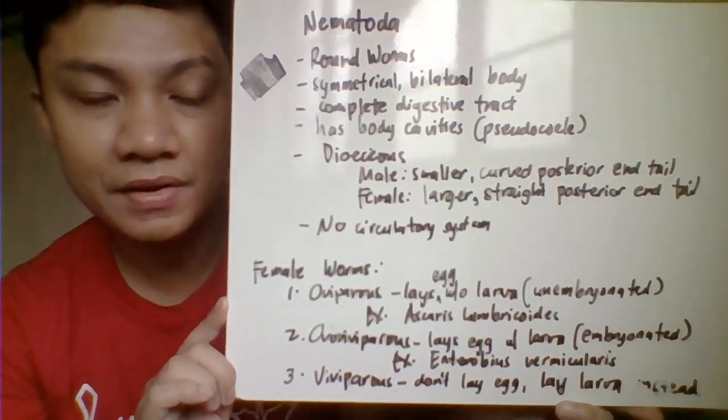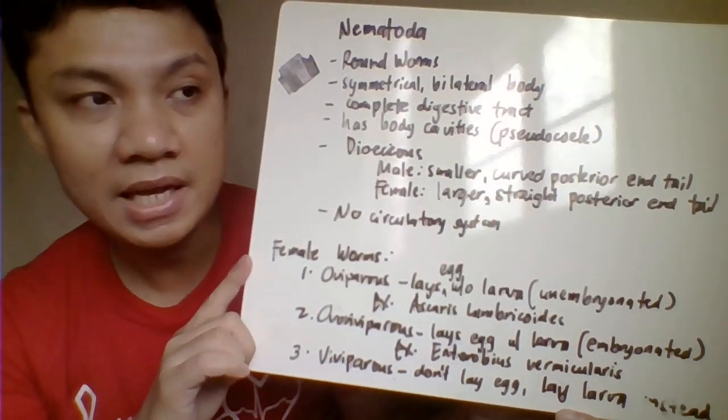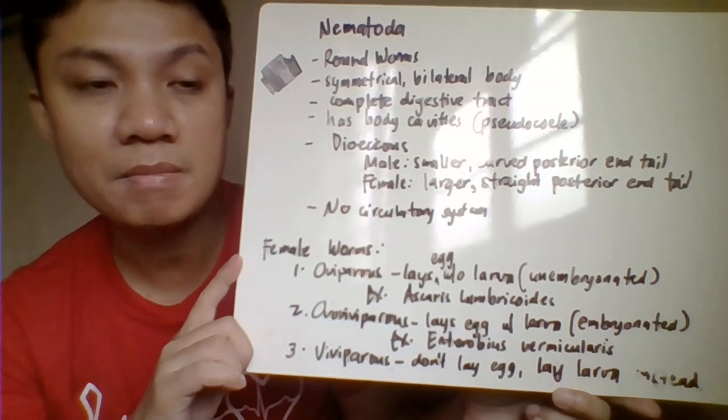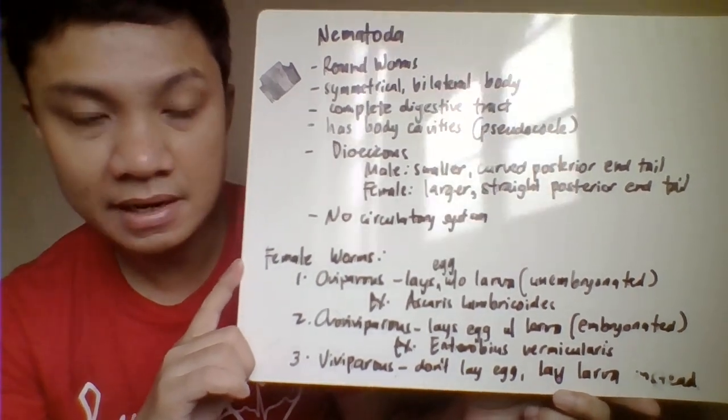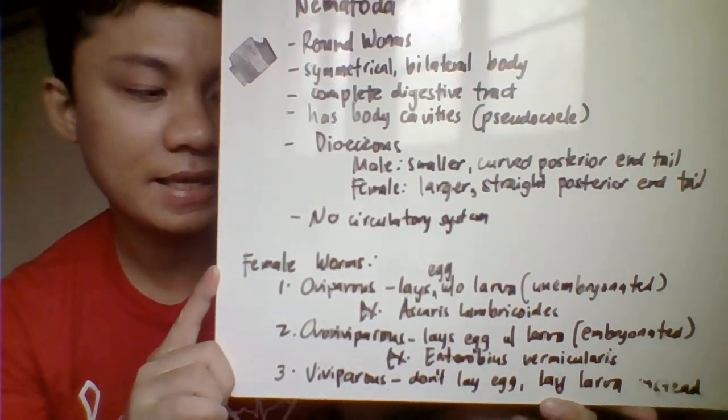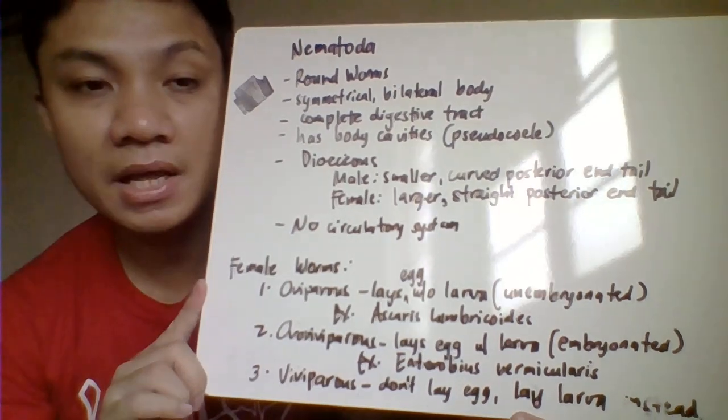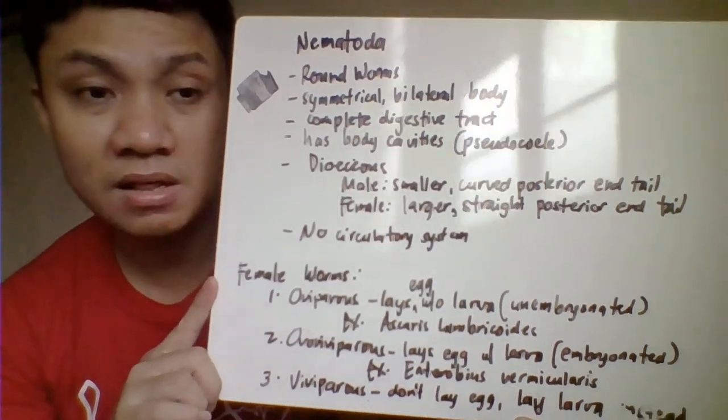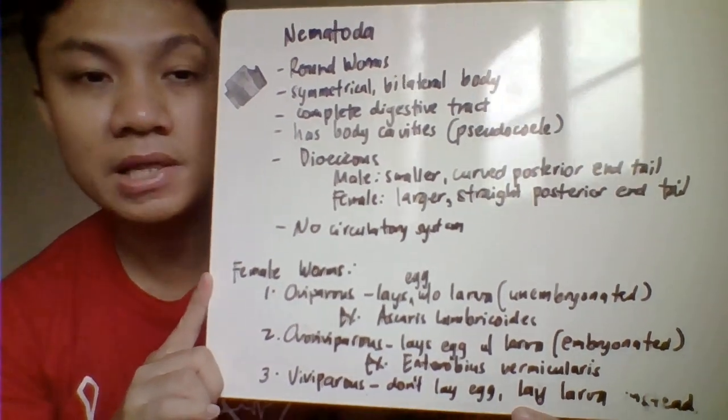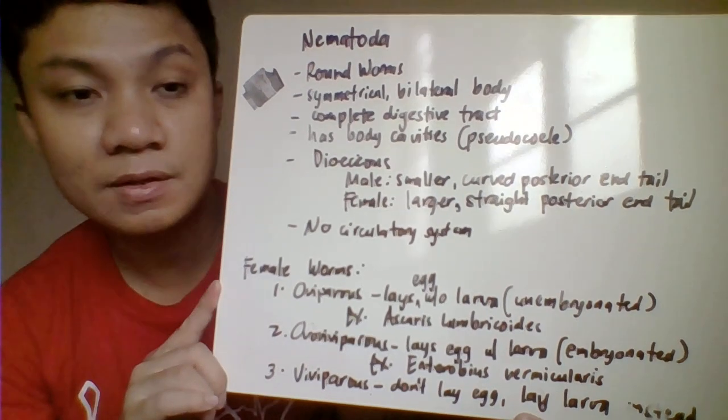We have here the classification of female worms. We classify them as oviparous. When we speak about oviparous, these are female worms that are laying eggs, not larvae. Their eggs are not yet embryonated and require embryonation. Embryonation takes place in the soil, especially for STH or soil transmitted helminths. For oviparous, we have Ascaris lumbricoides.